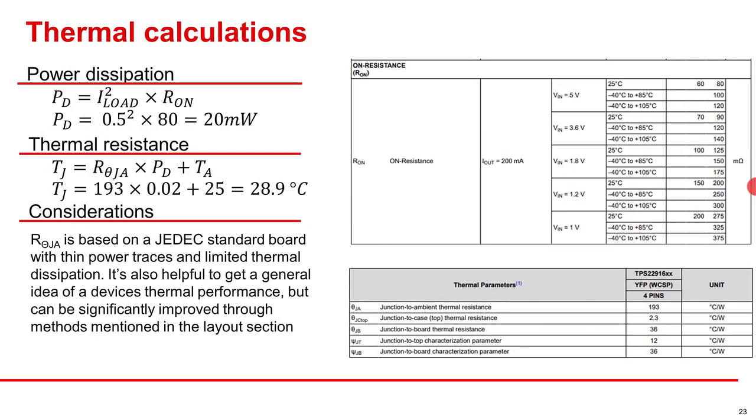Now we check our power dissipation and junction temperature to ensure we won't damage the device. We see that with 20 milliwatts of power dissipation, the junction temperature only rises to 28.9 Celsius at our expected ambient temperature of 25C. R theta J A can be used to compare our devices with competitor devices and give a general idea of thermal performance. This value is determined based on JDEC standard boards, which isn't the greatest at dissipating heat. We'll go into methods of getting better thermal performance in the layout section.